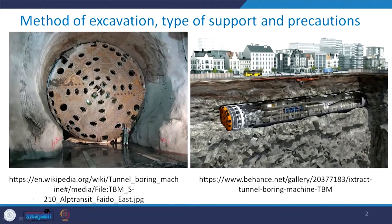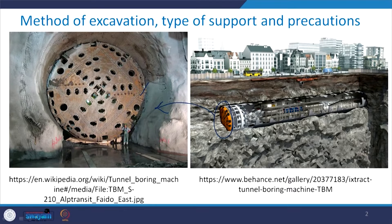First let us have a look at how this tunnel boring machine looks like. Here are the views. This is the front portion of this TBM. You can see that it is a very long assembly with various components. When you hear about this tunnel boring machine, this picture should come in your mind. There is a shield which helps in advancing the tunnel in its direction of advance. So when I say tunnel boring machine, you should immediately have these pictures in mind.